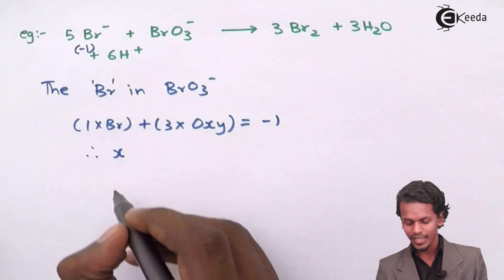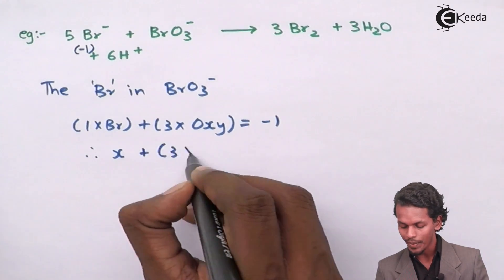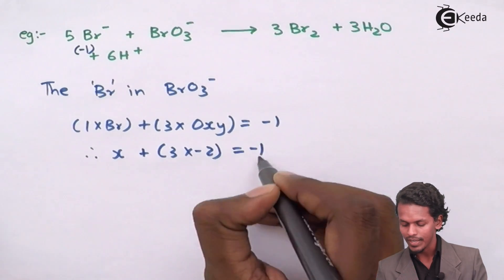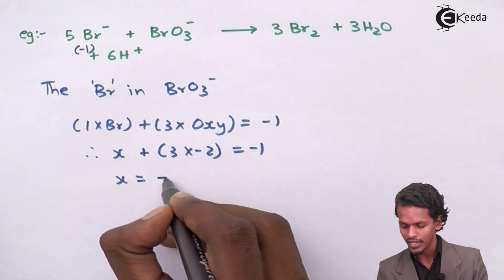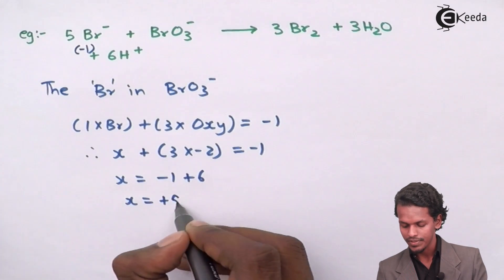Since the oxidation number of Br is not known to us in this case, I have taken it as X. So 3 times minus 2 gives us X plus (-6) equals minus 1, so X equals minus 1 plus 6, which gives us X equals plus 5.